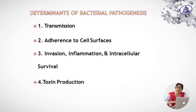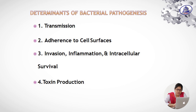What are the determinants of bacterial pathogens? Number one: transmission. Number two: adherence to cell surfaces. Number three: invasion, inflammation, and intracellular survival. Number four: toxin production.